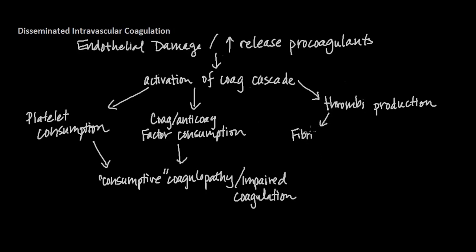Fibrinolysis is activated at sites of thrombus formation with generation of fibrin degradation products such as D-dimer. Large amounts of degradation products interfere with both fibrin clot formation and platelet aggregation, causing impaired coagulation. Tissue or organ damage may result from reduced perfusion, thrombosis, and or bleeding.